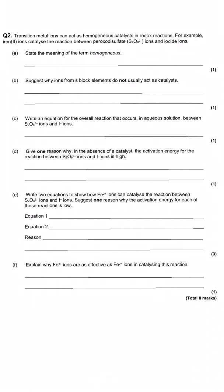The second question is about the other type of catalysis — homogeneous catalysis. They give iron(II) ions, Fe²⁺, catalysing the reaction between peroxodisulfate (S₂O₈²⁻) and iodide ions (I⁻). The first question asks us to define homogeneous catalysis: that is where the catalyst is in the same phase or same state as the chemicals being catalysed.